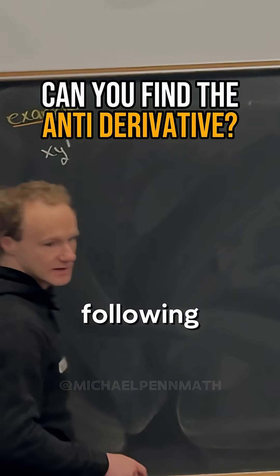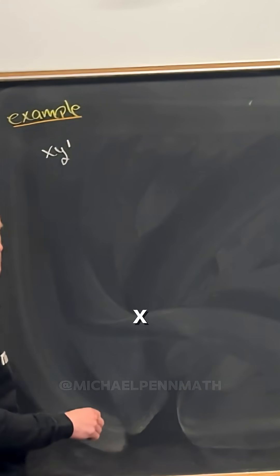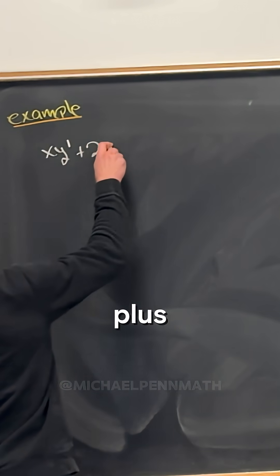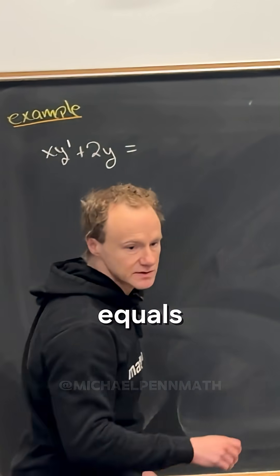So let's say we've got the following differential equation: xy prime plus 2y equals e to the x.